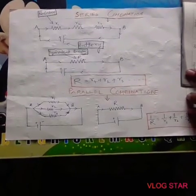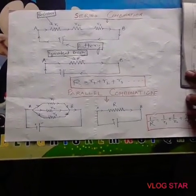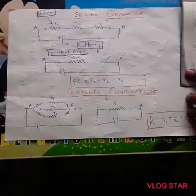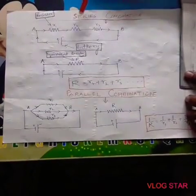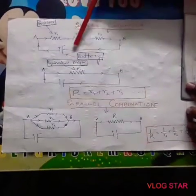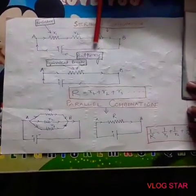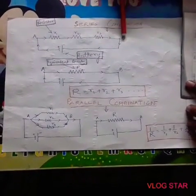What is combination of resistors? When two or more resistors are connected together to make a circuit, it is called a combination of resistors.